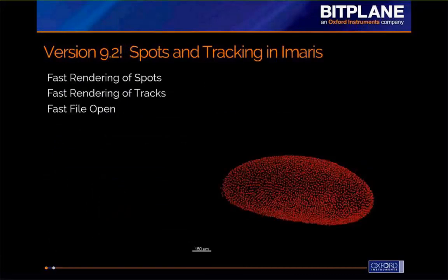With version 9.2, released last week, our development team turned their attention to the spots and tracking tools. The spots tool is commonly used to detect things like vesicles, nuclei, cells, and other round or spherical objects. It reports counts, intensities, and spatial positions for detected objects. Spots is also commonly used with time-lapse images for tracking. Now with Imaris 9.2, you can use these tools to analyze and visualize spots and their motion in terabyte-size images, including very long time lapses.